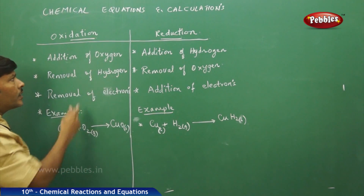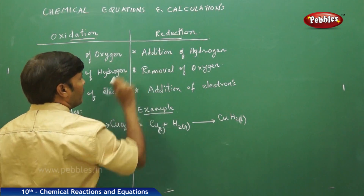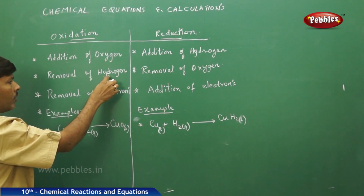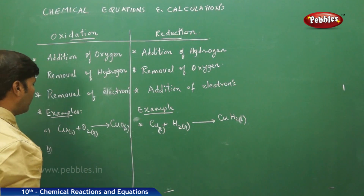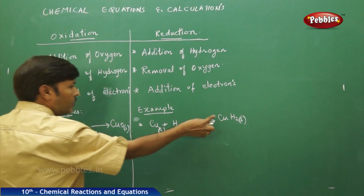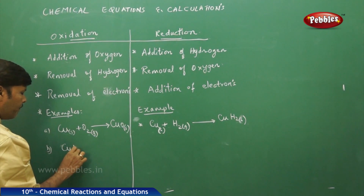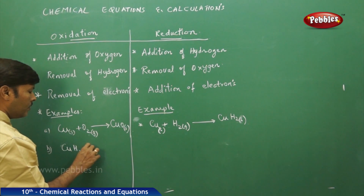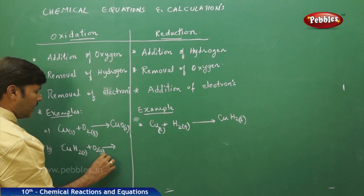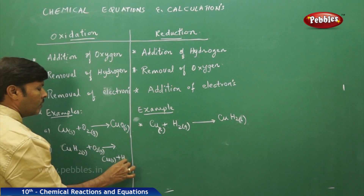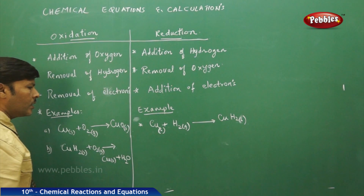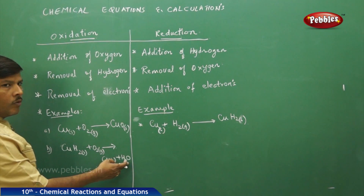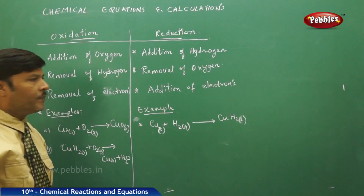We also say removal of hydrogen in the case of oxidation, and removal of oxygen in the case of reduction. To justify the second statement: if we want to remove hydrogen, we take cupric hydride. For this cupric hydride solid, if you pass oxygen gas, you get metal solid plus water. Here we have successfully removed the hydrogen in the form of water during oxidation, so the second statement is justified.